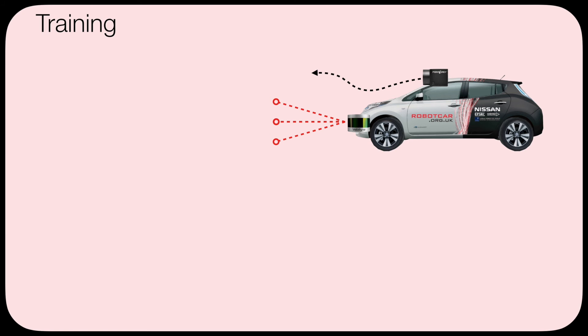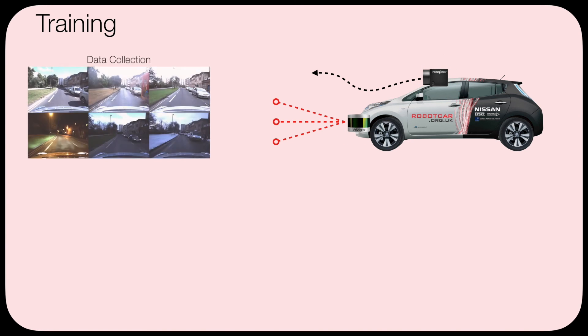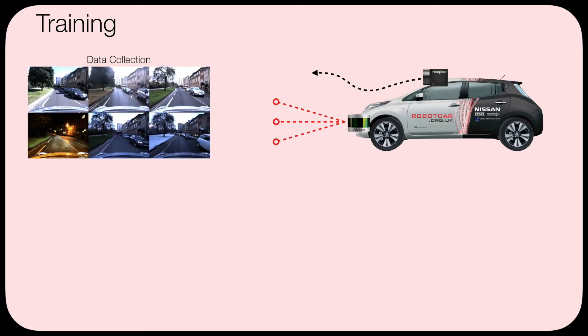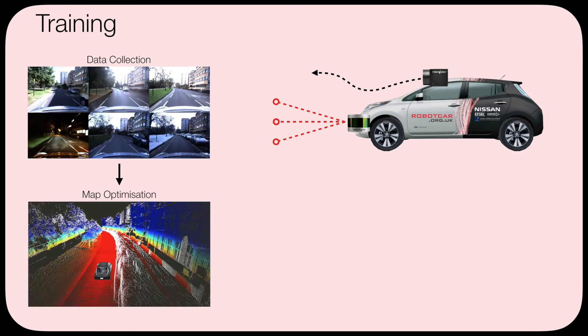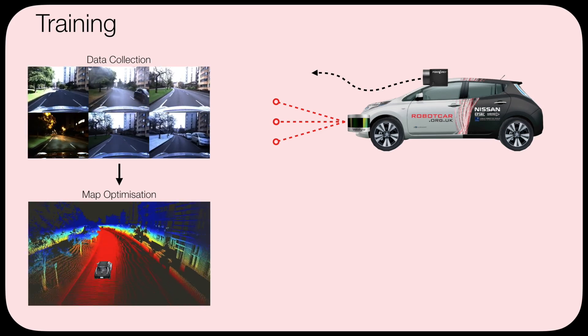To train our system we use a data collection vehicle with a stereo camera and a lidar scanner and collect numerous overlapping traversals of the same route. These sensors enable us to generate an optimized 3D point cloud of our route without any ephemeral objects such as cars.